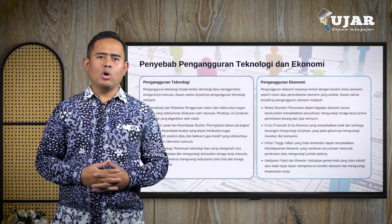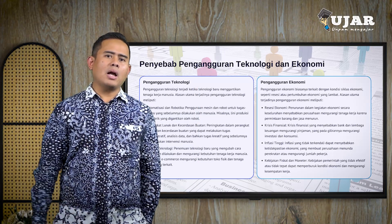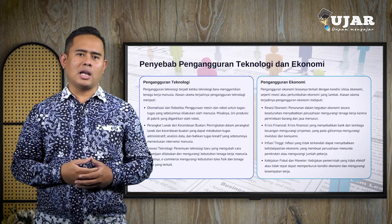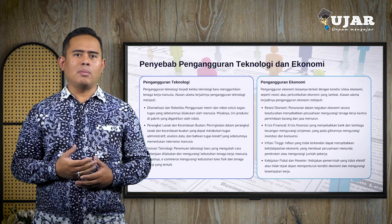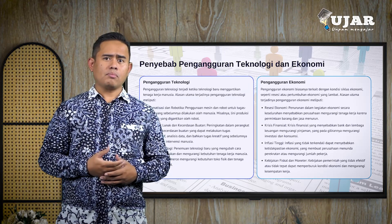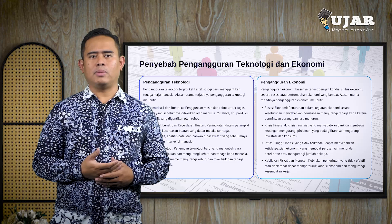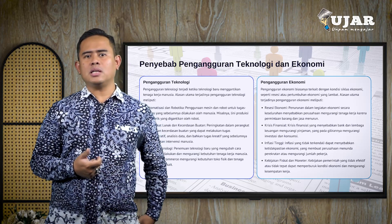Yang kedua, pengangguran teknologi terjadi ketika teknologi baru menggantikan tenaga kerja manusia. Alasan utamanya meliputi: pertama, otomatisasi dan robotika — penggunaan mesin dan robot untuk tugas-tugas yang sebelumnya dilakukan oleh manusia, misalnya lini produksi di pabrik yang digantikan oleh robot; kedua, perangkat lunak dan kecerdasan buatan yang dapat melakukan tugas administratif, analisis data, dan bahkan tugas kreatif yang sebelumnya memerlukan intervensi manusia; ketiga, inovasi teknologi — penemuan teknologi baru yang mengubah cara bekerja, misalnya e-commerce yang mengurangi kebutuhan toko fisik dan tenaga kerja yang terkait.